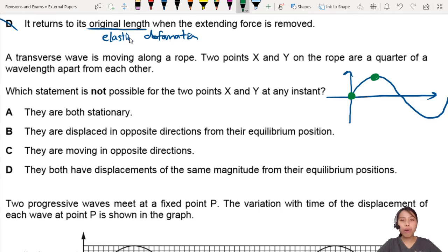Which is not possible for both points at any instant? They are both stationary. If you look at this one that I drew here, the green dot up here is stationary. It's not moving, it's gone up, it's going to start coming down. But they cannot both be stationary. So this is wrong. Maybe this is the answer. Let's check.